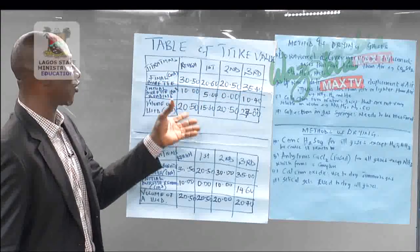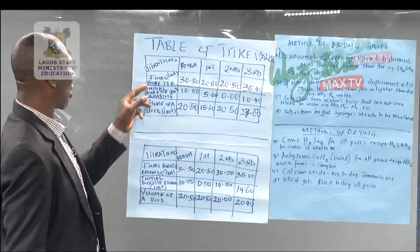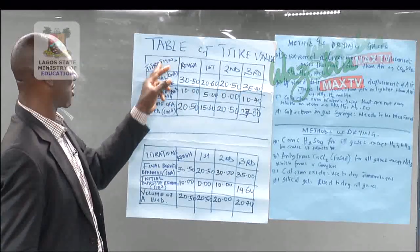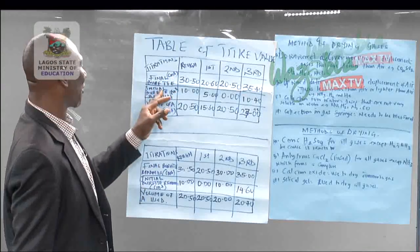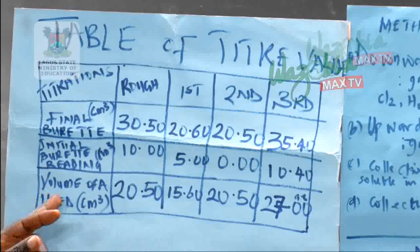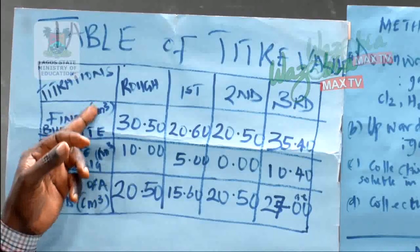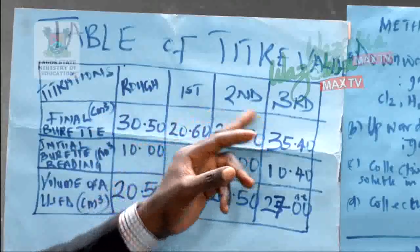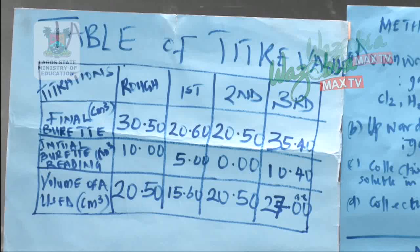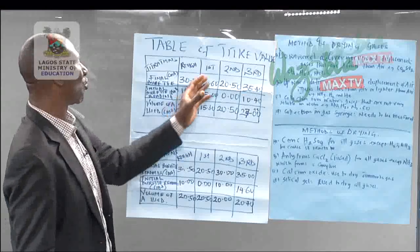This is how you make your table. If you make the table in a different way, it will not be easier for the examiner to score you. When you have the titrations, you record the final burette reading, all in centimetre cubes. Then you have the initial burette reading, and then the volume of acid used, all calibrated in cm³. Now, you can have four trials, three trials, or even five trials.